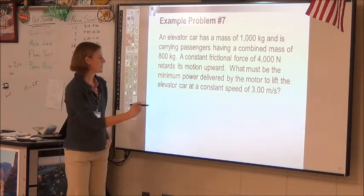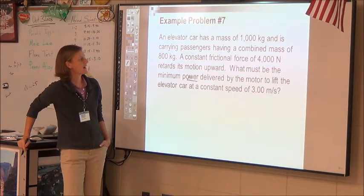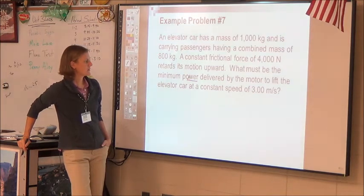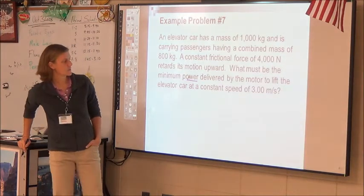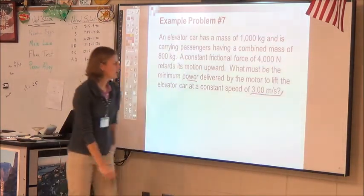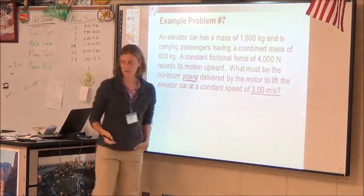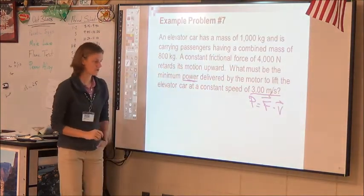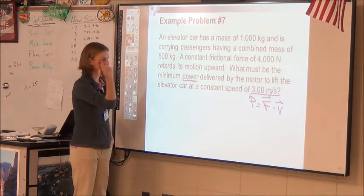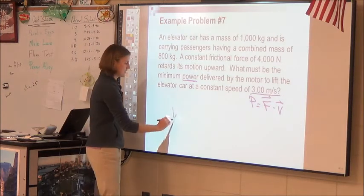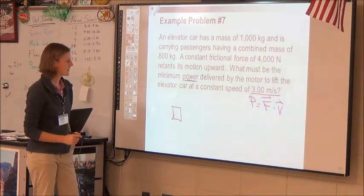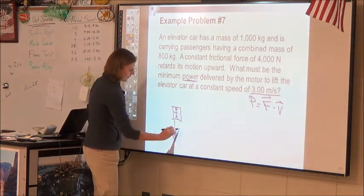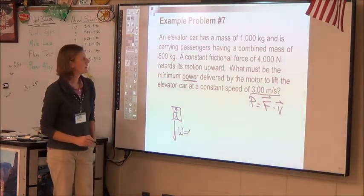Quick power problem. What must be the minimum power here? It says an elevator car has a mass of 1,000 kilograms and is carrying passengers having a combined mass of 800 kilograms. A constant frictional force of 4,000 newtons retards its motion upward. What must be the minimum power delivered by the motor to lift the elevator at a constant speed of 3 meters per second? It says power, and it just gave me a speed, so I'm really thinking of that formula that we just came up with, power equals force dot velocity, and technically that is a dot product too. They should be in the same direction. So I need a force. I've got the speed, the speed's 3, but what is the force? Is there one force? It's an elevator, what's on an elevator?